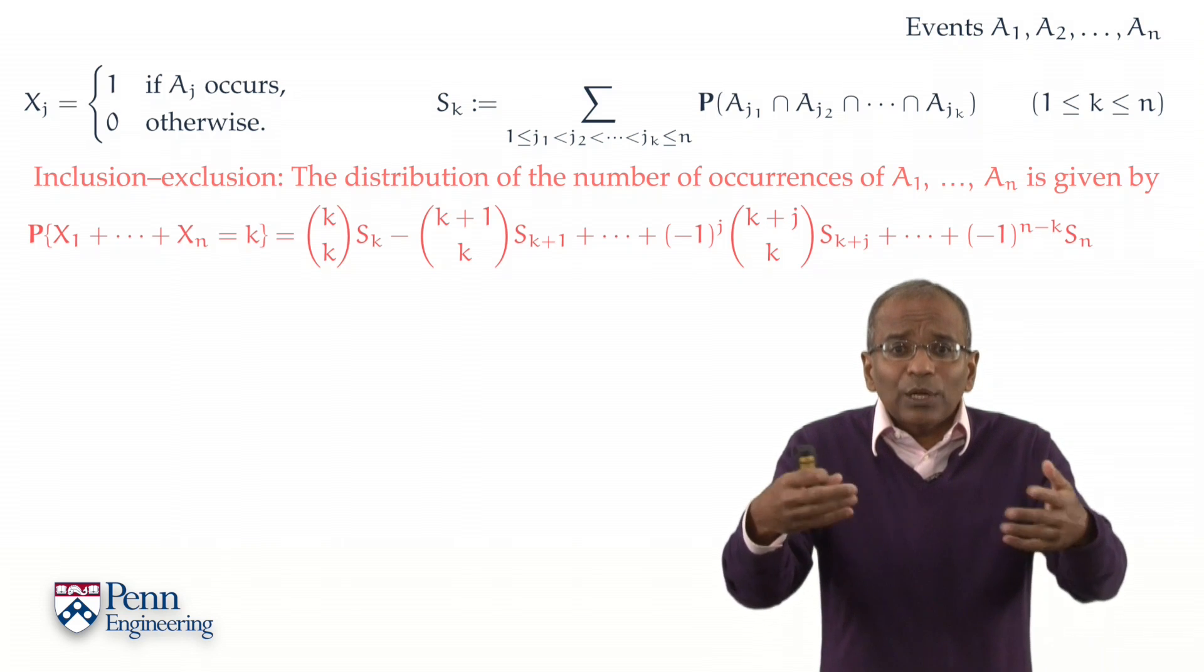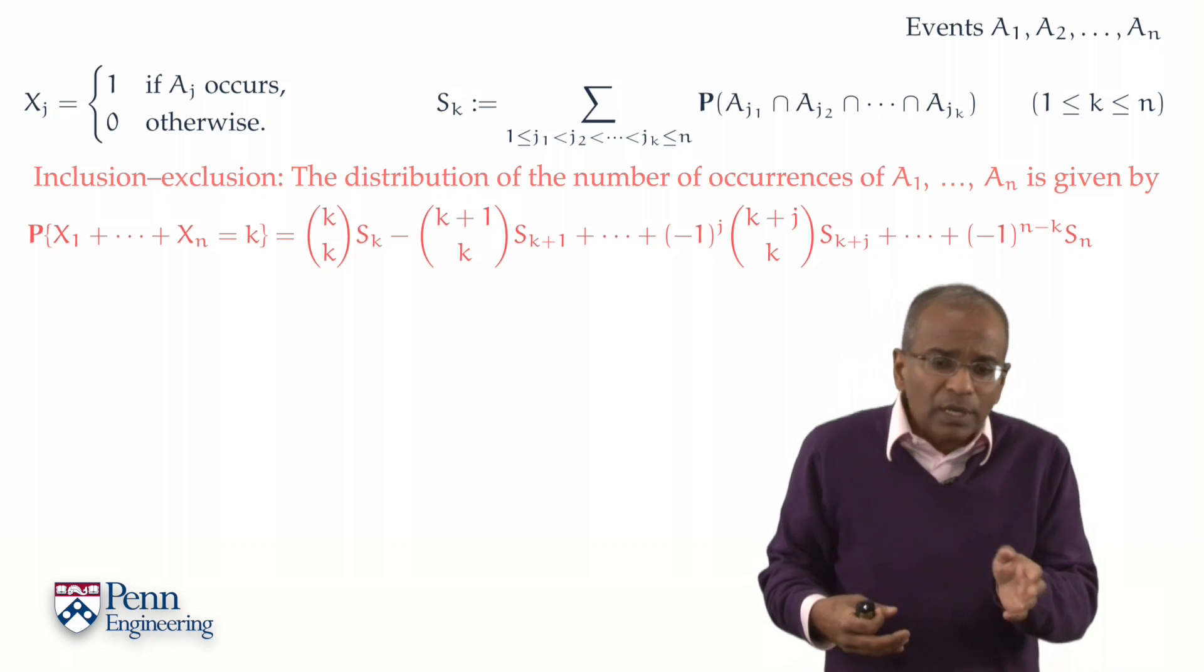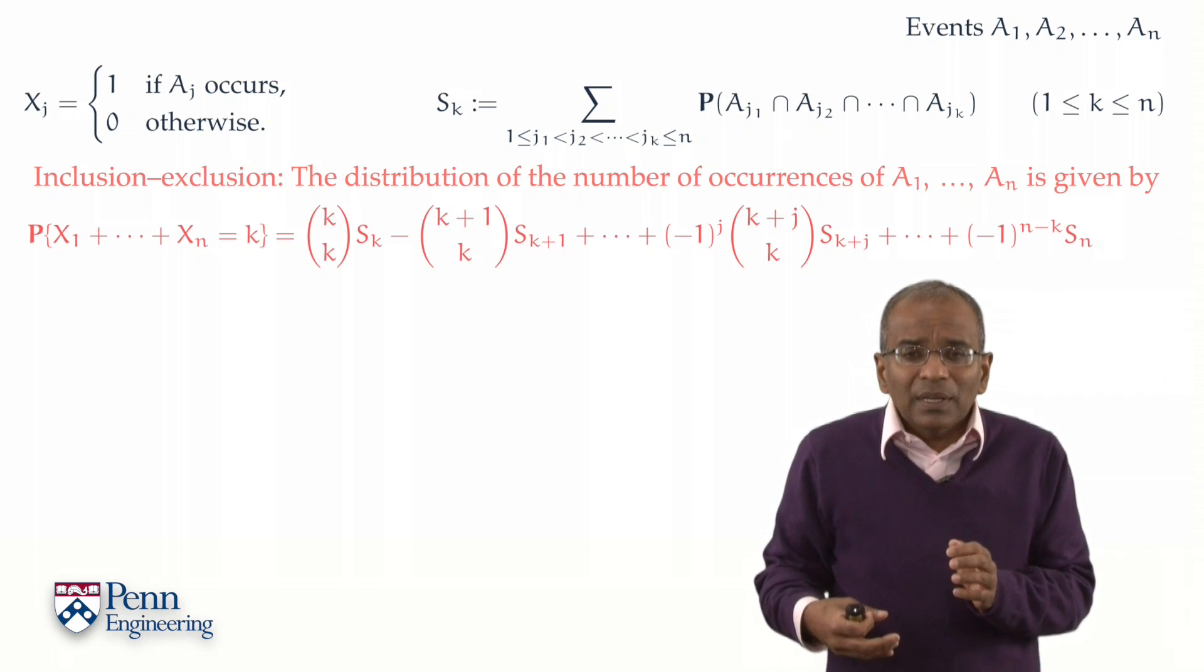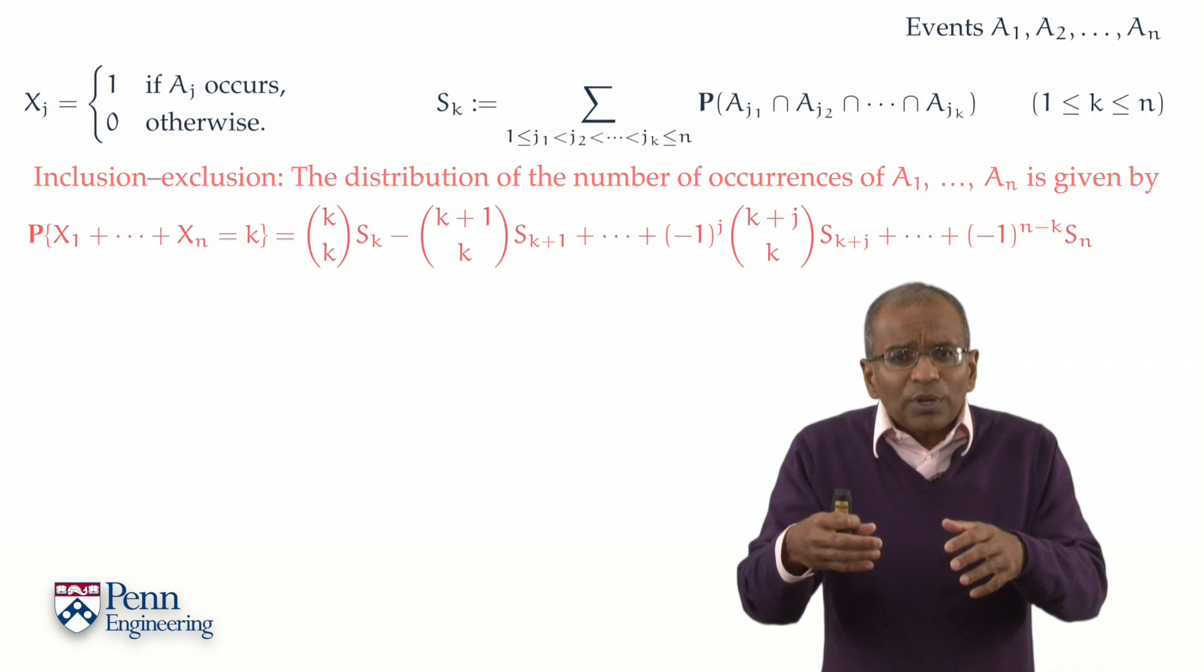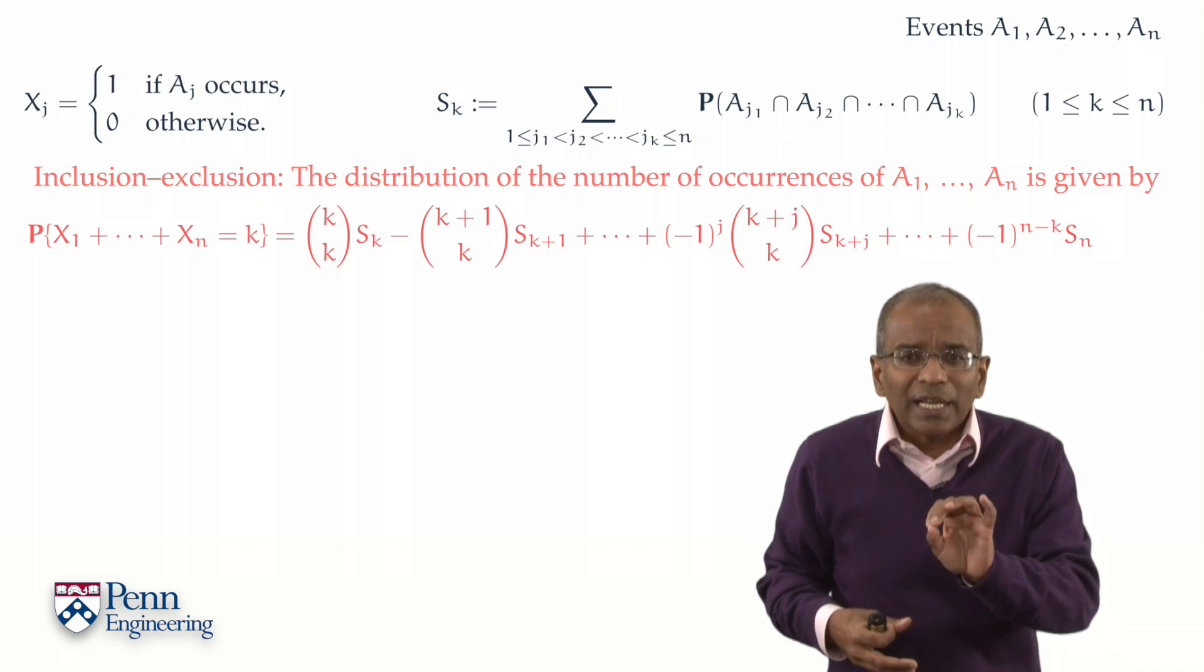Venn diagrams should be particularly efficacious in that setting, and we could almost read out the inclusion-exclusion formula by over-counting, under-counting, over-counting, under-counting, and edging up to solution. We could progress along similar lines for a general formulation, but as I promised you, we are going to take a different tack here.